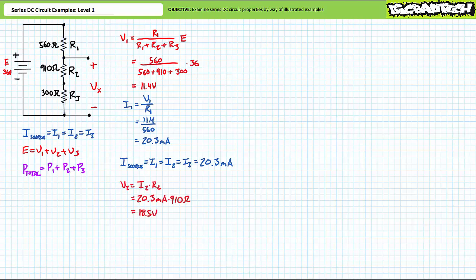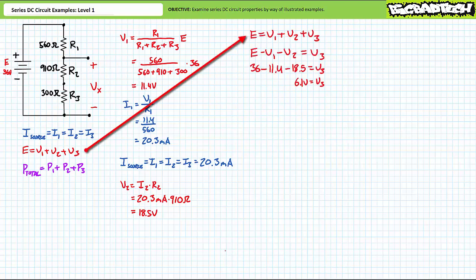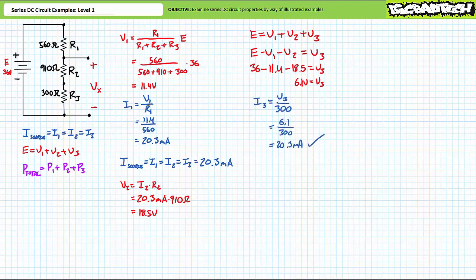Another implementation of Ohm's law demonstrates that V2 is 18.5 volts. We could use another implementation of the DC voltage divider rule or Ohm's law to solve for V3; however, let's use Kirchhoff's voltage law. We know source voltage, V1, and V2. An algebraic rearrangement solving for V3 suggests V3 equals E minus V1 minus V2. Substituting our given values yields V3 to be the remaining 6.1 volts. As a means of checking our work, using Ohm's law to solve for I3 substituting our value from KVL does indeed yield 20.3 milliamps as expected.